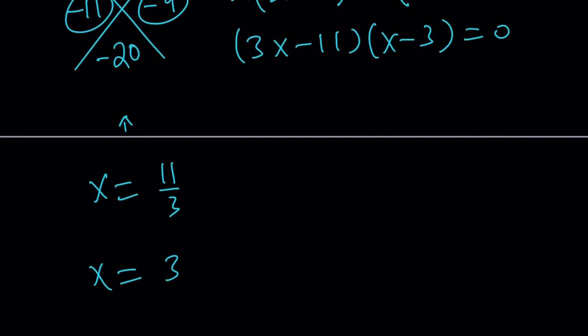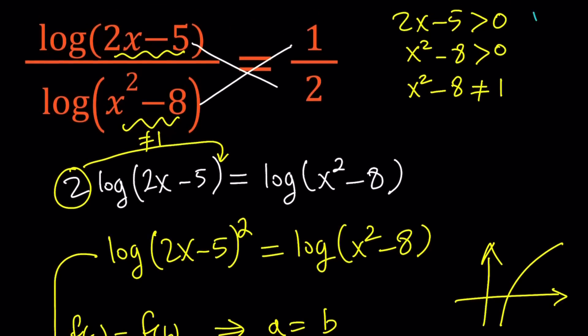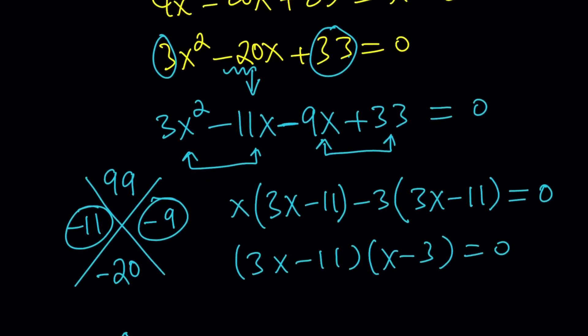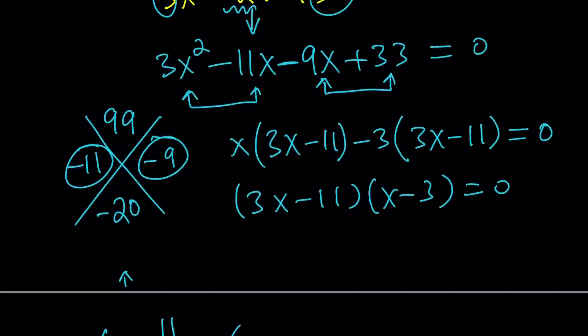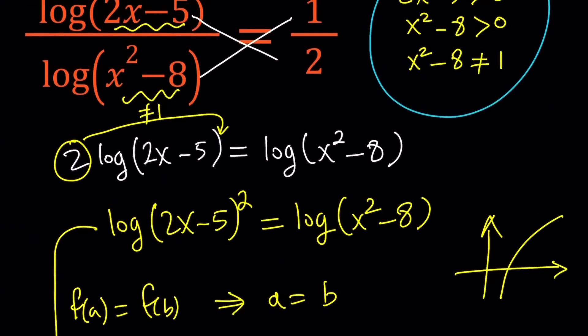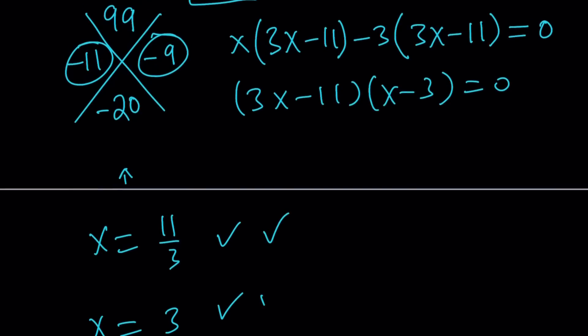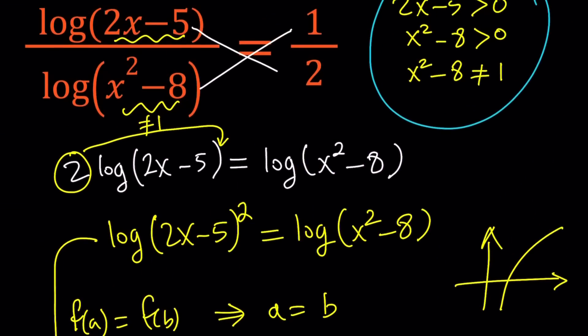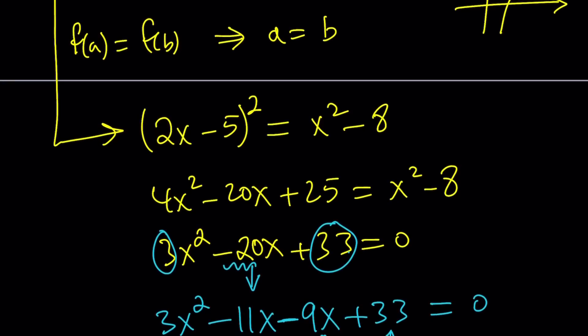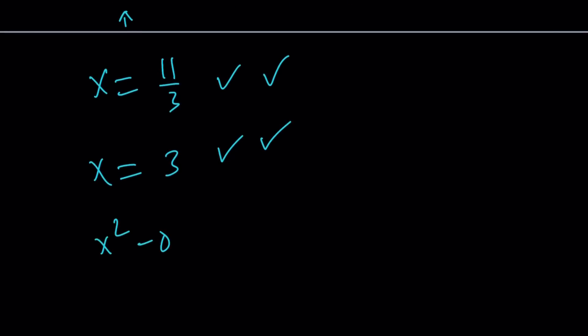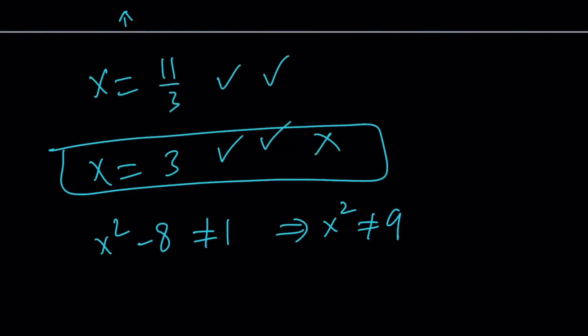But wait a minute. Are these all the solutions? Or are there any other solutions? Or do they work? We have to check something. So let's go back to the beginning. And remember our criteria. Our numbers have to satisfy this. So 2x minus 5, x must be greater than 5 halves, like 2.5. Well, if you check both of these numbers, they work. Greater than 5 halves. Good. What about the second one? Is x squared minus 8 positive? If x is 11 thirds or 3 in both cases, x squared minus 8 is positive. So second check. But the third one is a tricky one. Because x squared minus 8 should not equal 1, which means x should not equal 3 or negative 3. So we kind of fail on this one. x squared minus 8 does not equal 1 implies x squared does not equal 9. But that's not the case. So we fail. Therefore, x equals 3 does not satisfy the criteria. And we end up with a single solution, which is x equals 11 thirds.